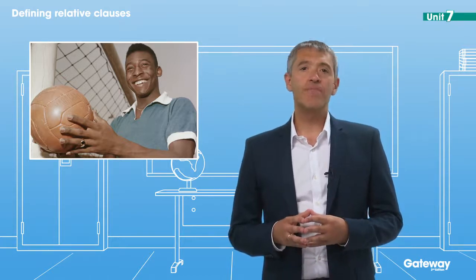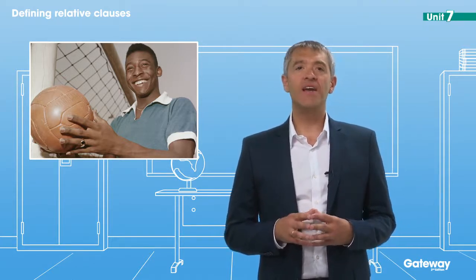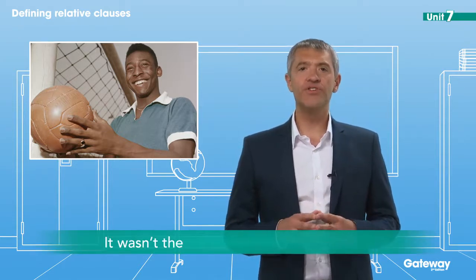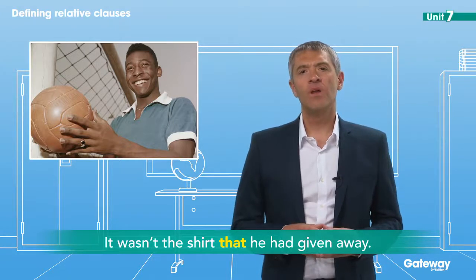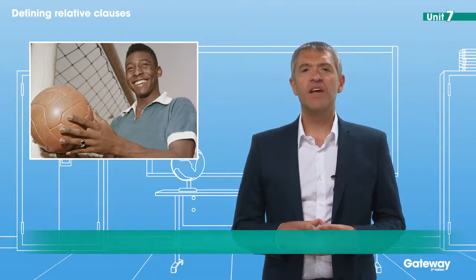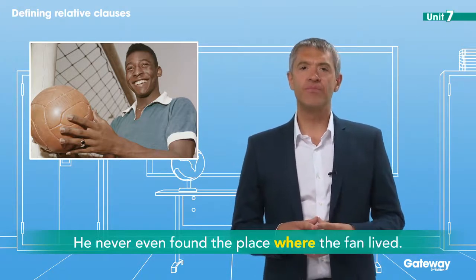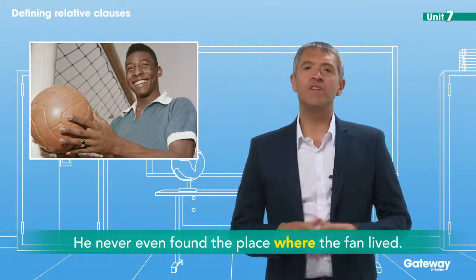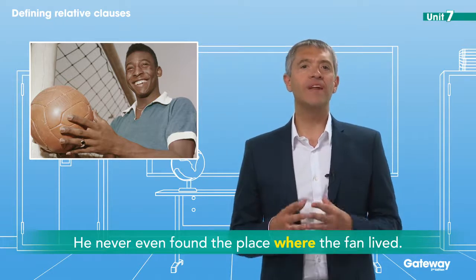The friend came back with a shirt. He never told Pelé that it was new and that it wasn't the shirt that he had given away. In fact, he never even found the place where the fan lived. The important thing was that Pelé believed it was his lucky shirt, and he started playing well again.